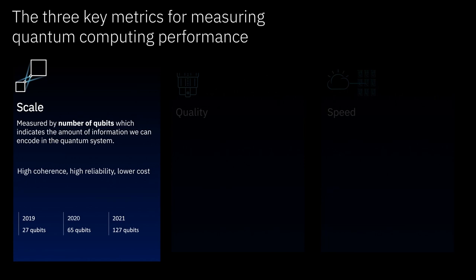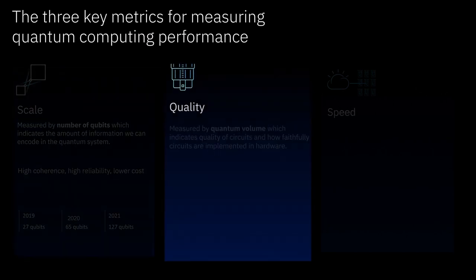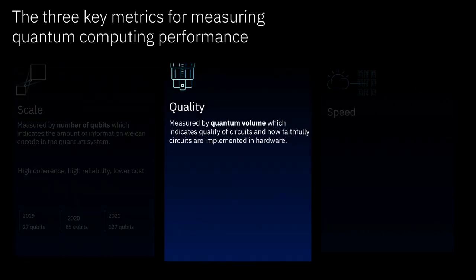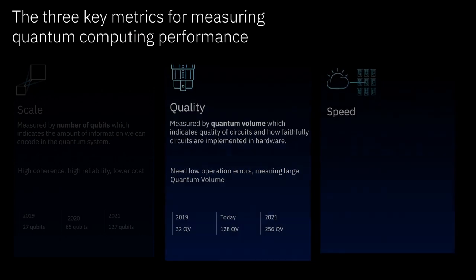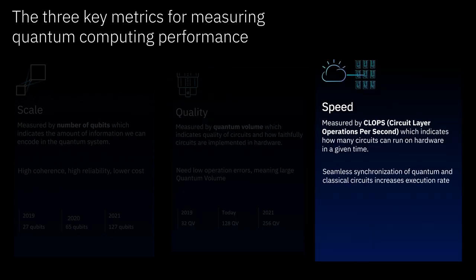This is the reason we must continue investing in hardware technologies to ensure scale advances each year. The second is quality — a measure of how large a quantum circuit we can execute without too many errors. Third and finally, we have speed: a measure of how fast our systems can solve a problem. We need to be able to solve problems in a reasonable amount of time or we don't have a business.